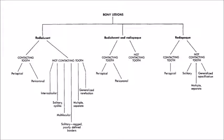Radiolucent bony lesions can either be contacting the tooth or not contacting the tooth. Lesions contacting the tooth include periapical lesions or pericoronal lesions surrounding the crown. Lesions not contacting the tooth can be in the interradicular region — either solitary, multilocular, or a solitary ragged poorly defined border lesion, multiple separate lesions, or generalized rarefaction.